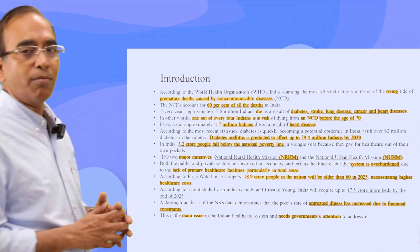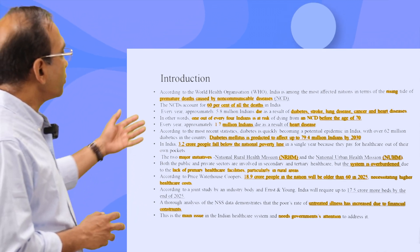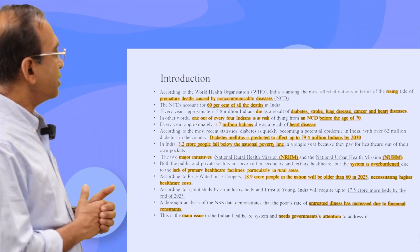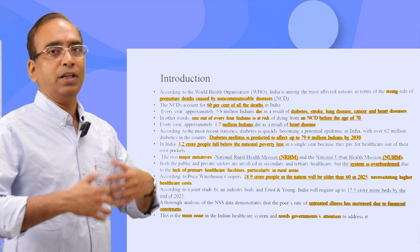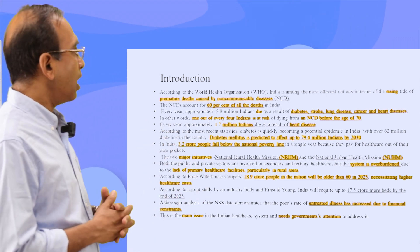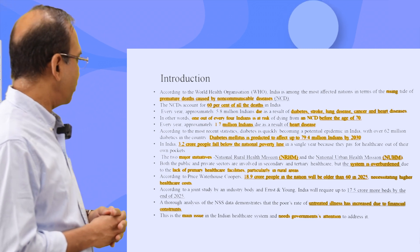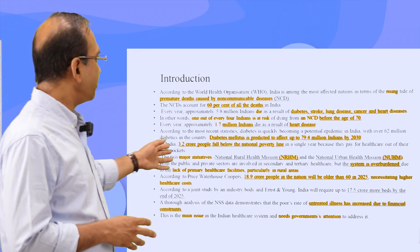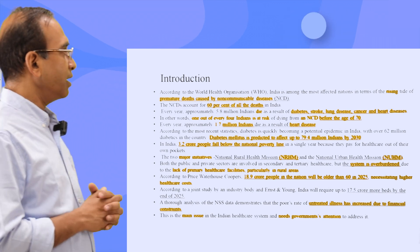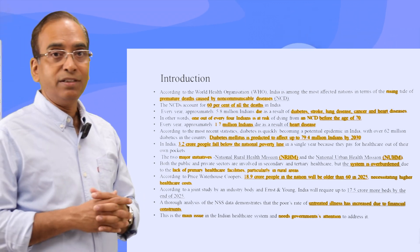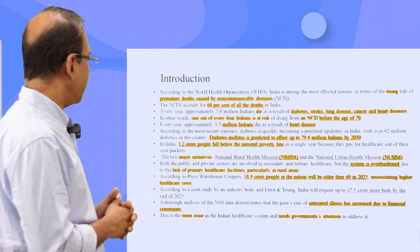There are certain other numbers in the slide. Almost 1.7 million Indians die as a result of heart disease. India's diabetes issue is globally being discussed; large numbers of Indians are suffering, and sometimes we call it the diabetes capital of the world. In India, 3.2 crore people fall below the national poverty line in a single year because they find difficulties in paying health care expenditures, especially out-of-pocket expenditures.